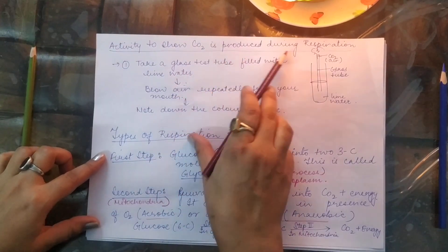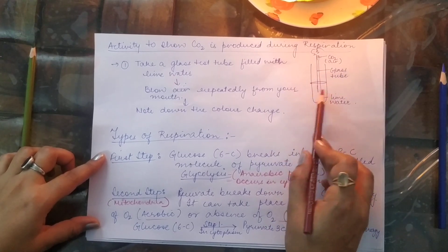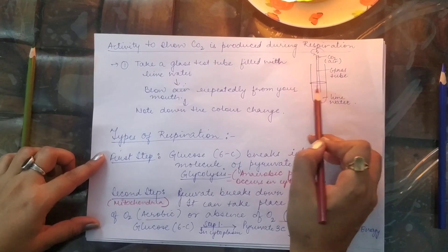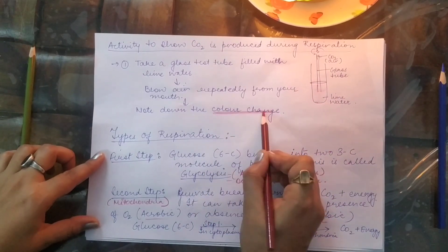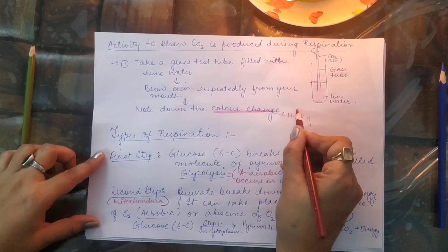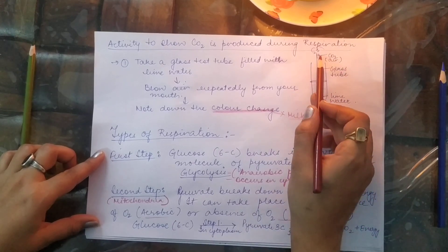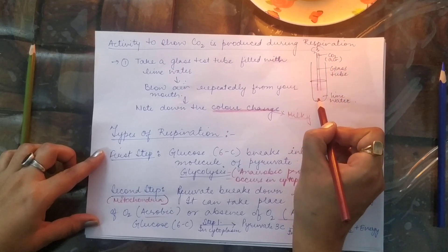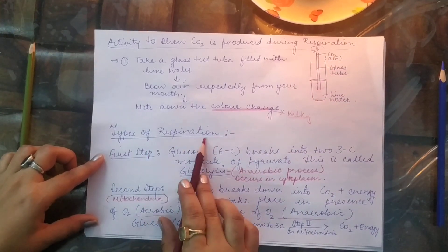There is a small activity to show that CO2 is produced during respiration. Take a glass tube and add lime water into it. When you blow air into the lime water, after some time you will see a color change — the lime water will turn milky. This milkiness indicates that CO2 is released during exhalation, as CO2 turns lime water milky, as you have read in class 7.